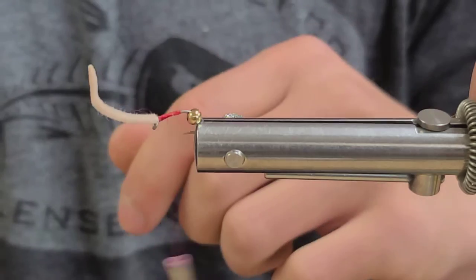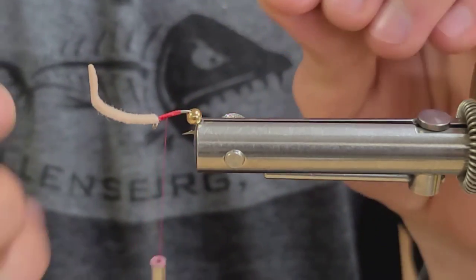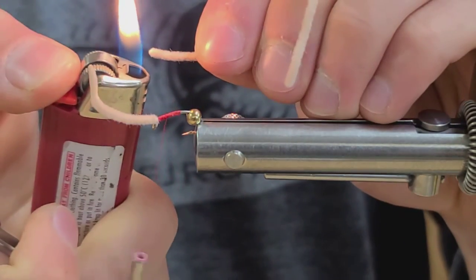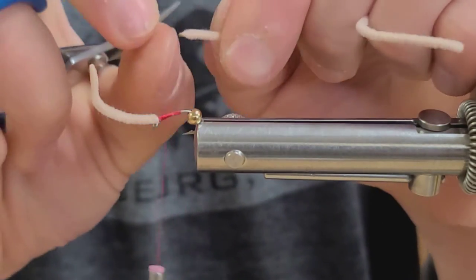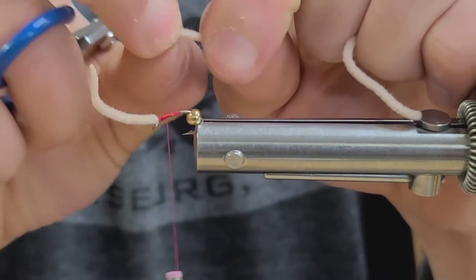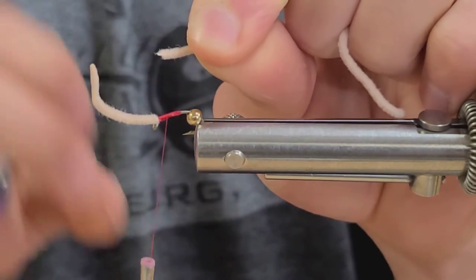If that doesn't work for you too, what you can do is take the lighter again and burn the end. And then once you have that bulb at the end, once you pick that off, you have the core exposed as well.